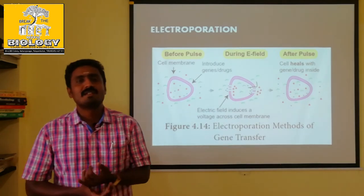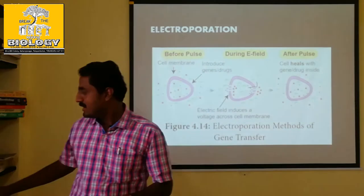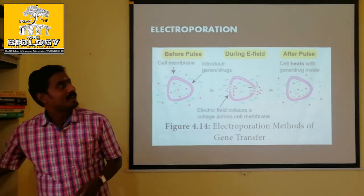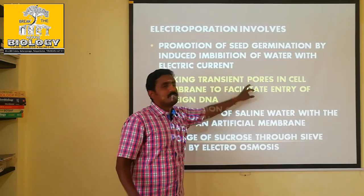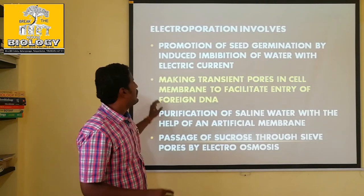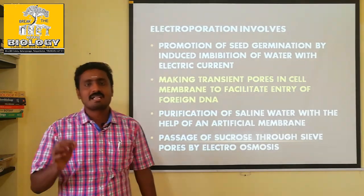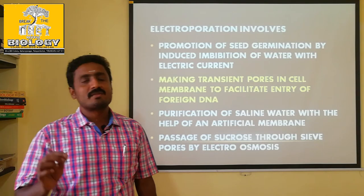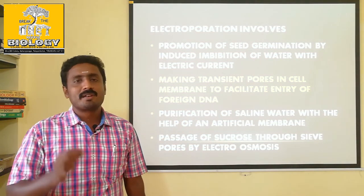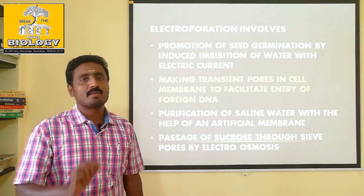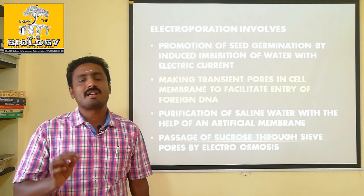There is a method of gene transfer — electroporation. One method of gene transfer is the transient pores in the cell membrane. The cell membrane is selectively permeable. It takes a little time to break the selective permeable nature. It changes the DNA and introduces a favorable character in the plant or animal.